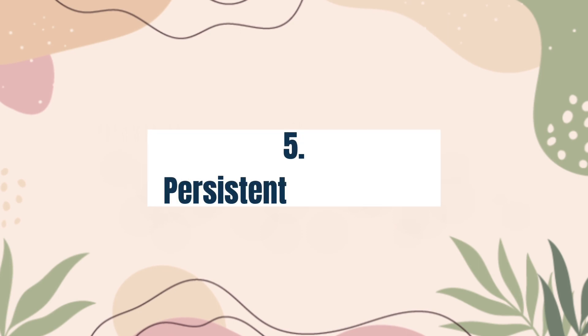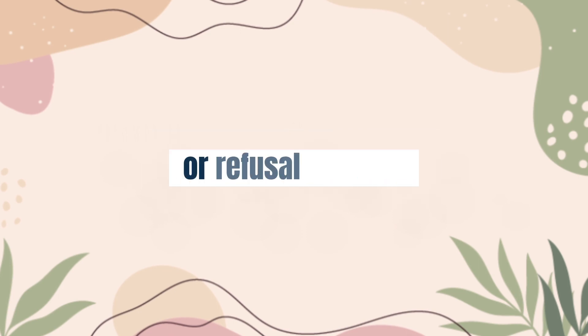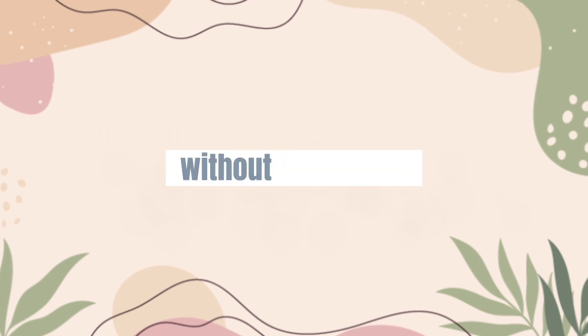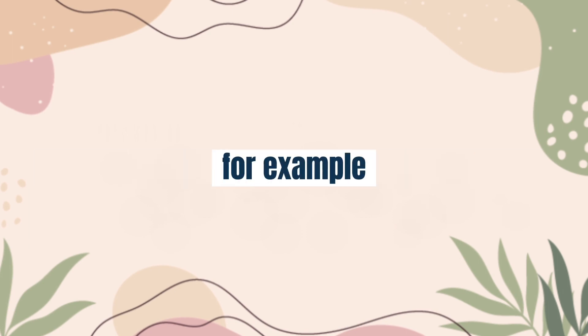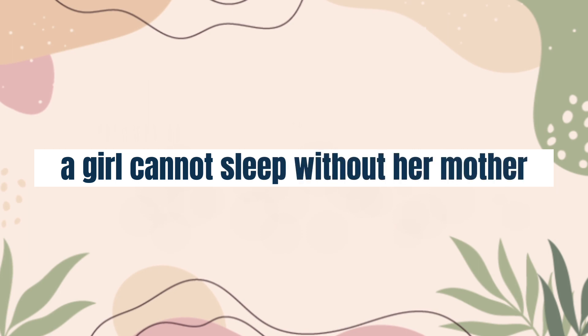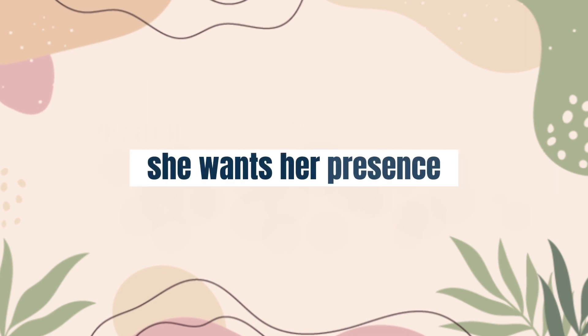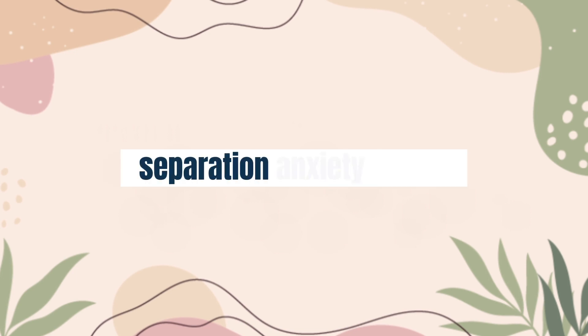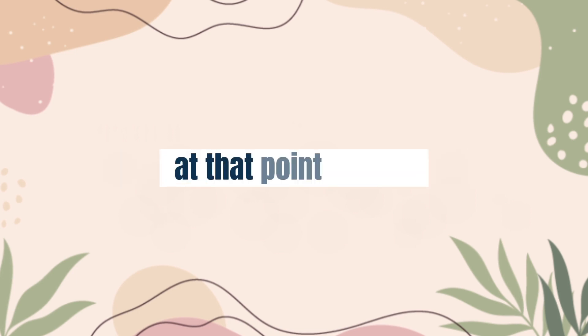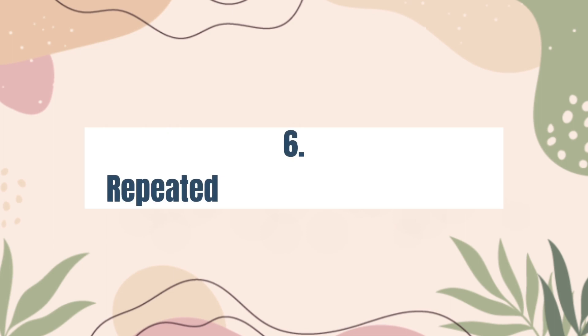Fourth symptom: persistent reluctance or refusal to sleep away from home or to go to sleep without being near a major attachment figure. For example, a girl cannot sleep without her mother; she wants her mother's presence until she falls asleep, and if the mother is not there, the girl gets a major separation anxiety attack and wants her back.